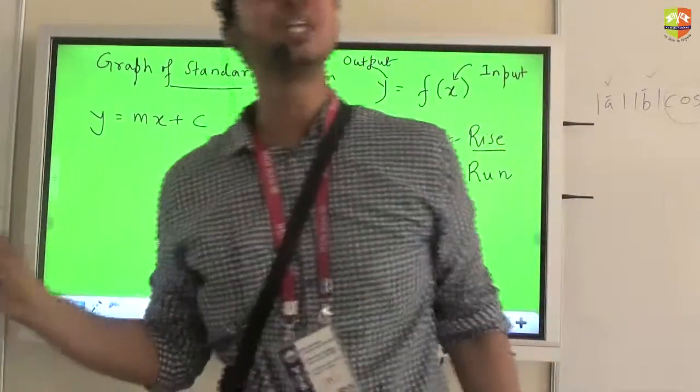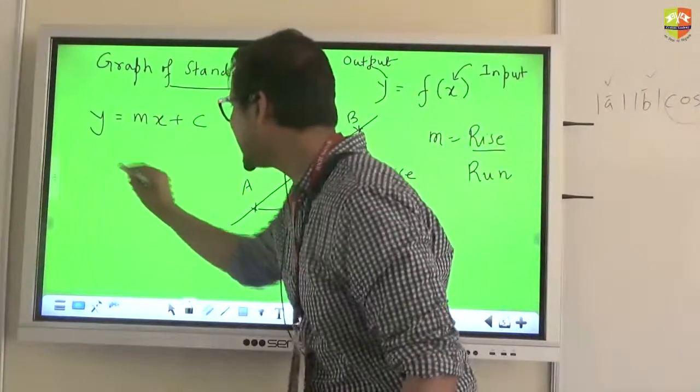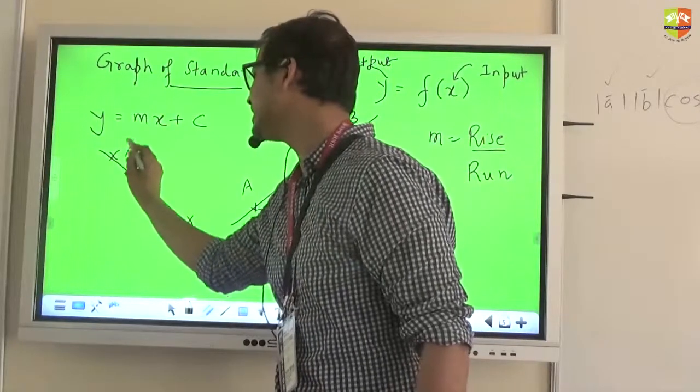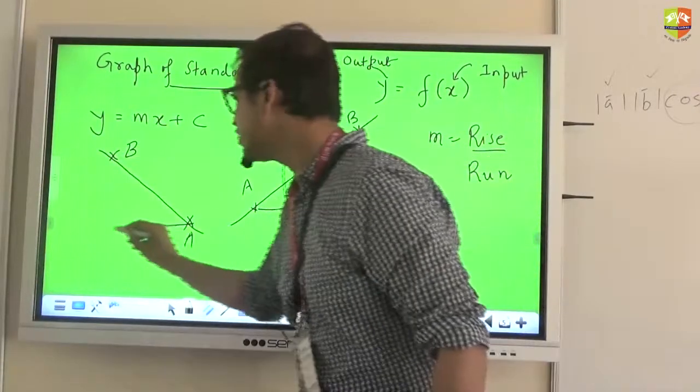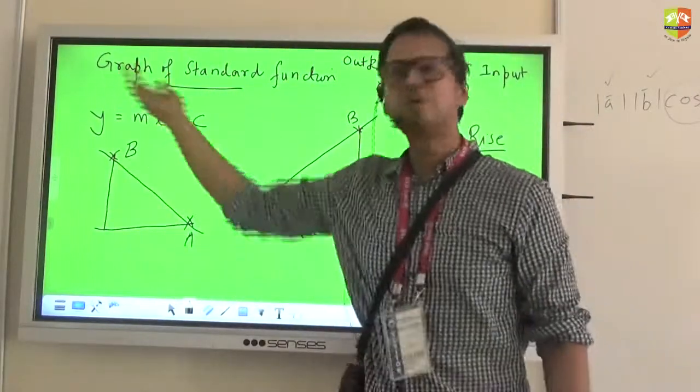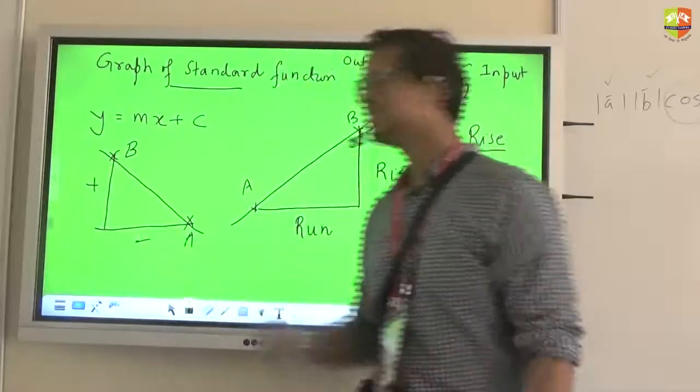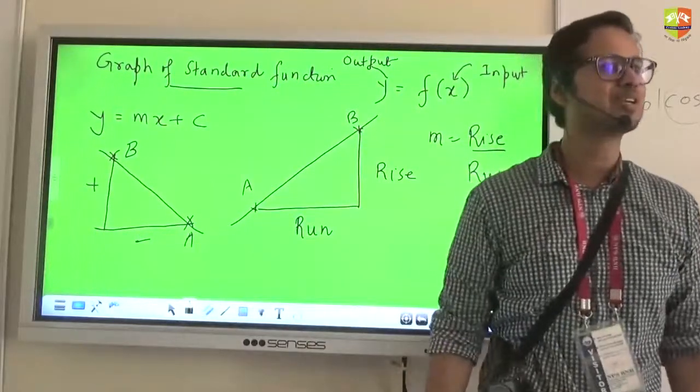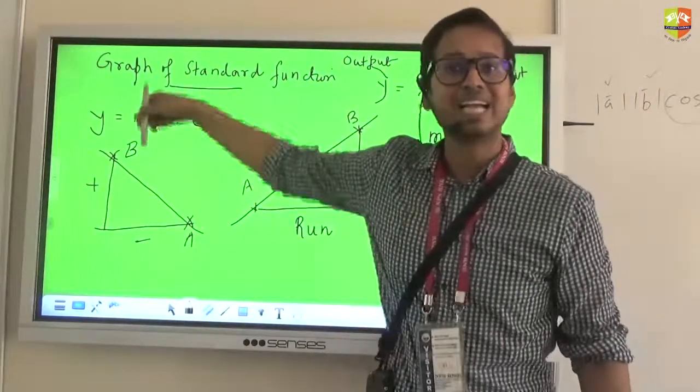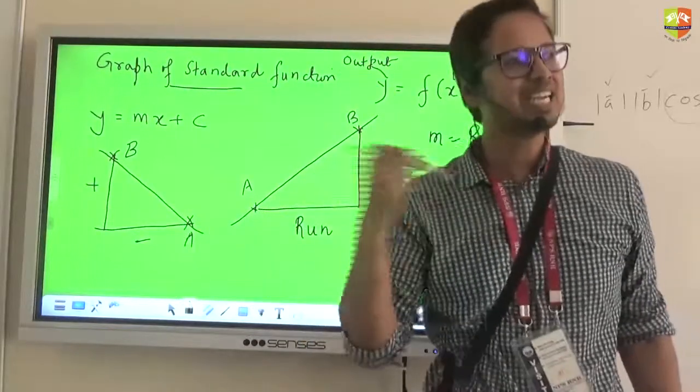So positive by positive is a positive quantity. If I am going from B to A, rise is negative. Run is also negative. So again the ratio is positive. So this line will have a positive slope irrespective of which point to which point you are targeting. Is that fine? That doesn't depend upon the two points you have chosen. But however, if I have a line like this.